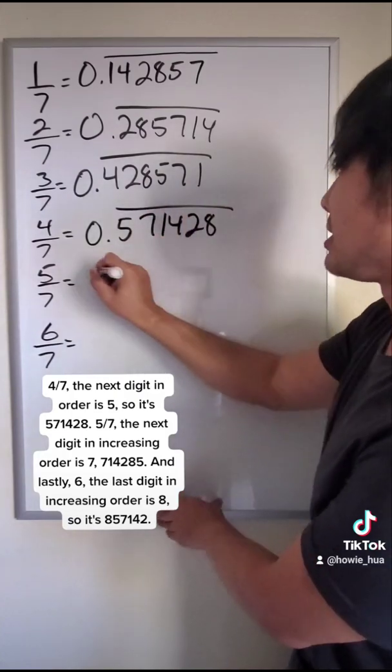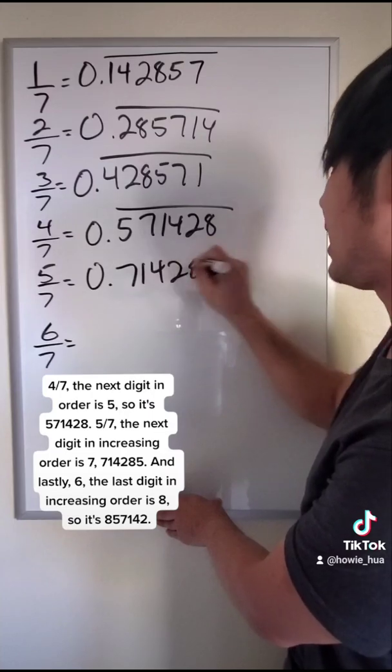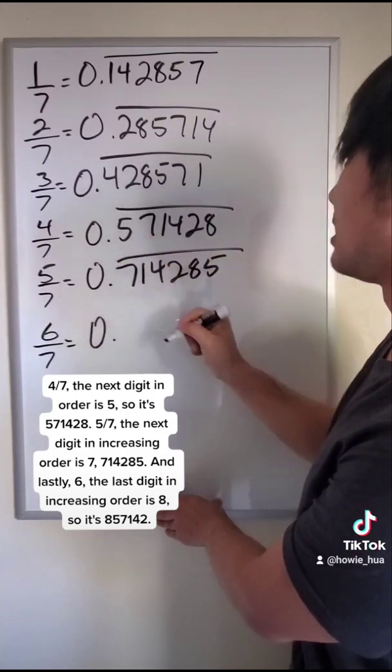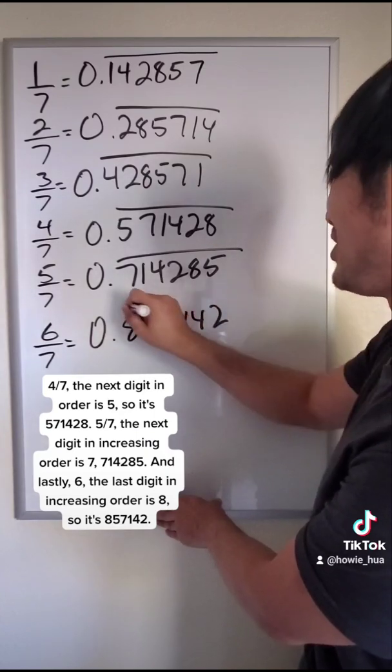Five sevenths, the next digit in increasing order is seven. So 714285. And lastly, six, the last digit in increasing order is eight. So it's 857142.